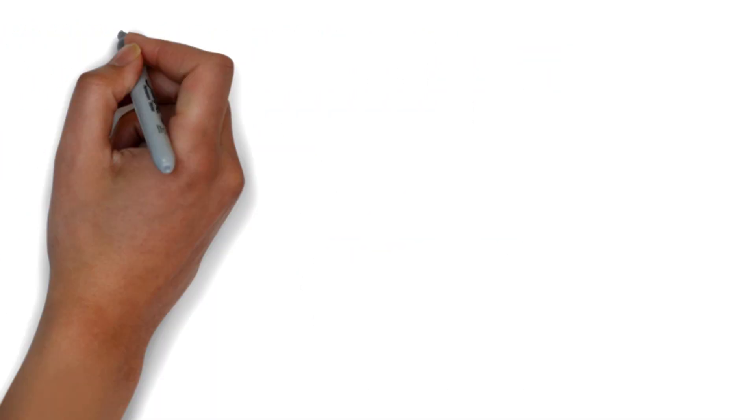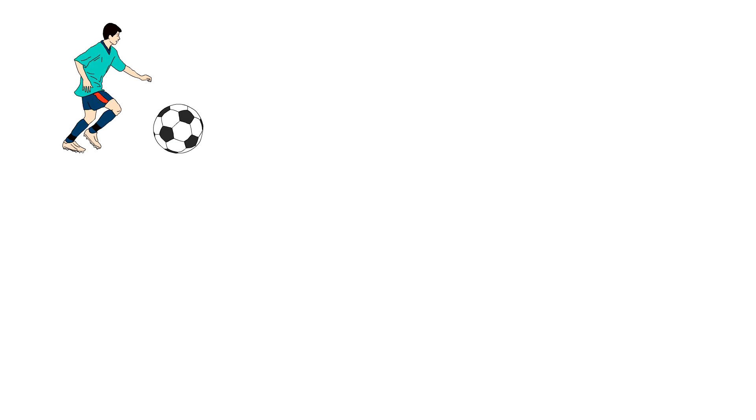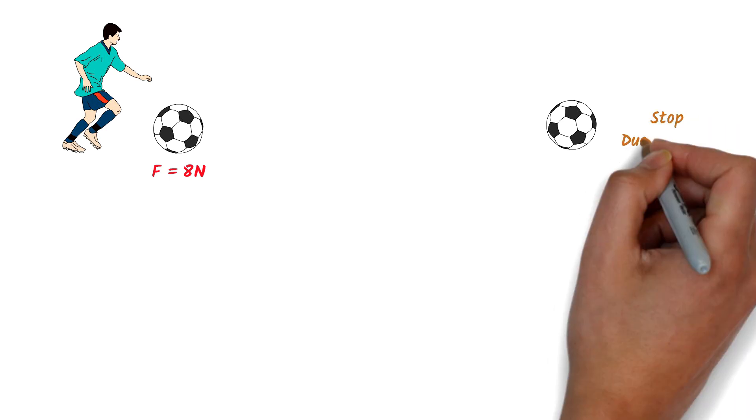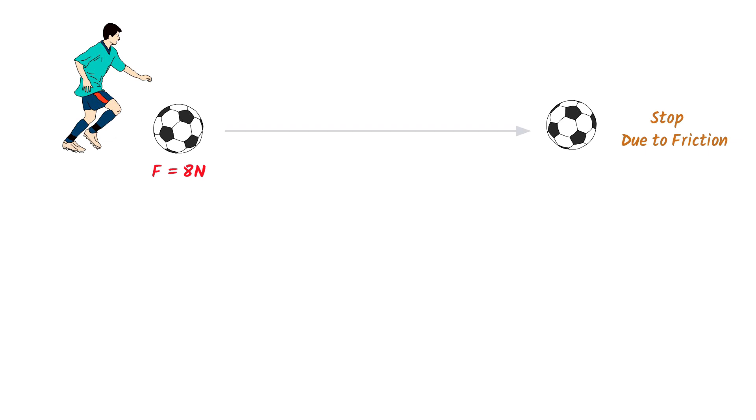For example, consider this stationary ball. Let I kick this ball and exert 8N force on the ball. As a result, the ball will start moving in the direction of applied force. After covering some distance, the ball will stop due to ground friction. Let this ball has covered 5 meter distance and time 10 seconds.